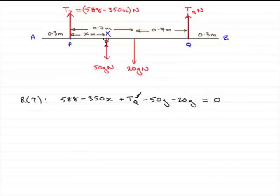So, from this, I can make tq the subject by rearranging the equation. I've got minus 50g and minus 20g. That's minus 70g. If I add that to both sides, I've got 70g over here. Then, I've got minus 588 and plus 350x.